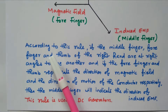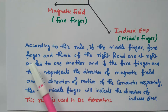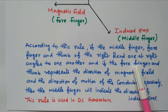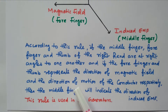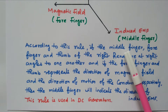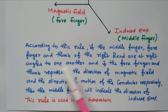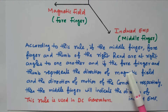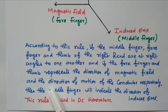According to this law, if the middle finger, forefinger, and thumb of the right hand are at right angles to one another, the forefinger and thumb represent the direction of magnetic field and direction of motion respectively, and the middle finger indicates the direction of induced EMF. This rule is used in DC generators.